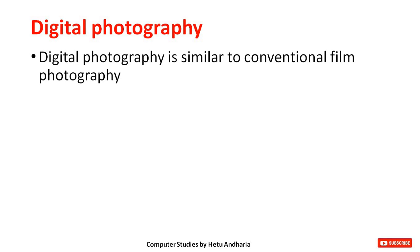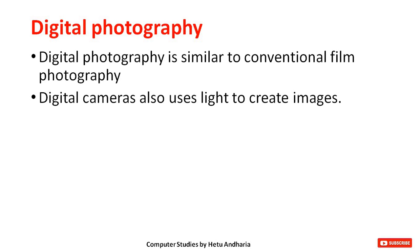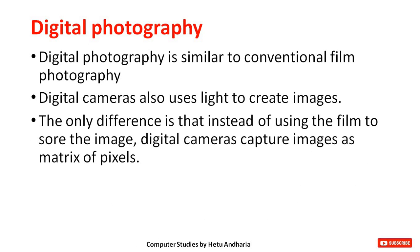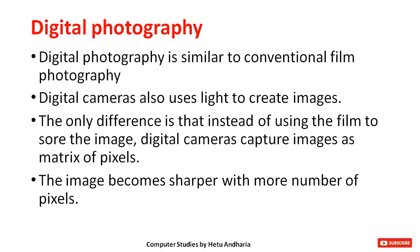Digital photography is similar to conventional film photography — digital cameras also use light to create images. The only difference is that instead of using film, digital cameras capture images as a matrix of pixels. The image becomes sharper with more pixels. When you purchase a smartphone, companies attract you with more megapixels, but if the megapixel count really is higher, then definitely the clarity will be more.